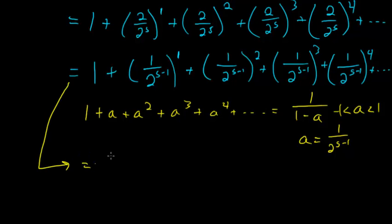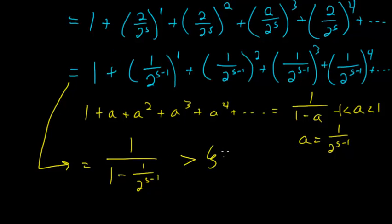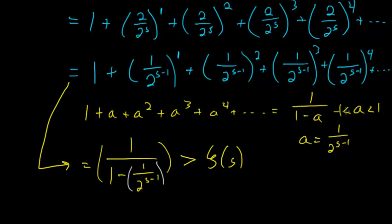We can just plug this into our formula, so this whole sum equals 1 over 1 minus 1 over 2 to the s minus 1. Recall that this entire sum is bigger than the zeta function, so if this sum converges and it's bigger than the zeta function, then for whatever values of s this converges, the zeta function would also have to converge. This geometric series will converge when this term is less than 1 or greater than negative 1. But since we have an exponential function dealing with real values of s, this will never be negative, so we don't have to worry about the lower bound.